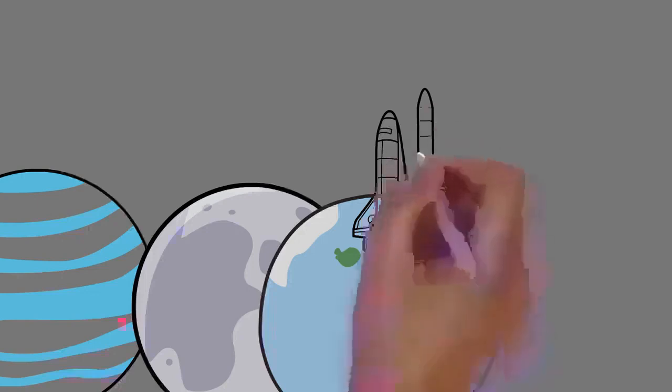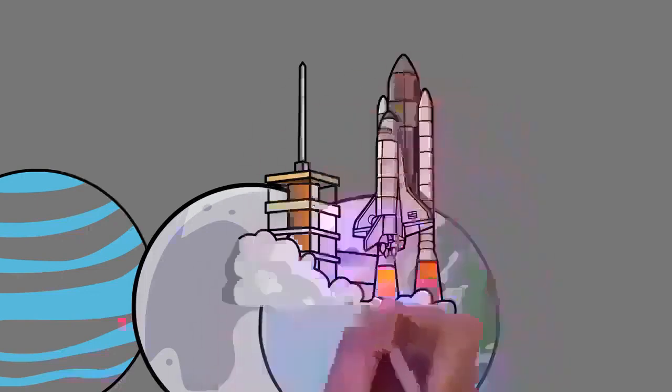The remaining 29.2% of Earth's surface is land, most of which is located in the form of continental land masses within one hemisphere, Earth's land hemisphere.